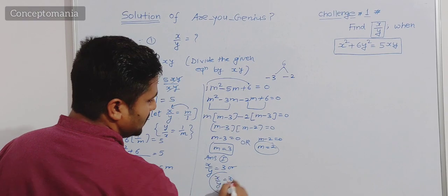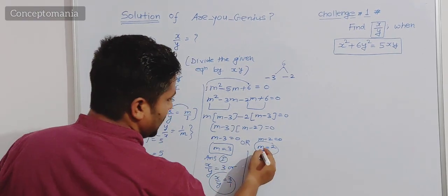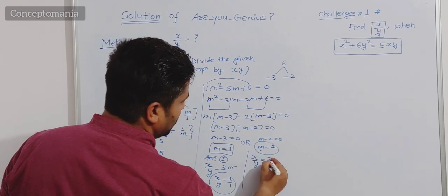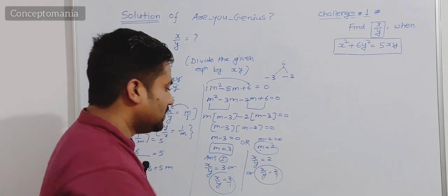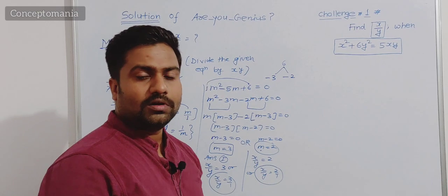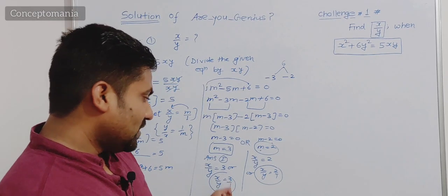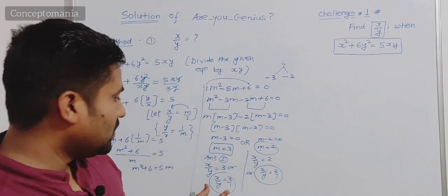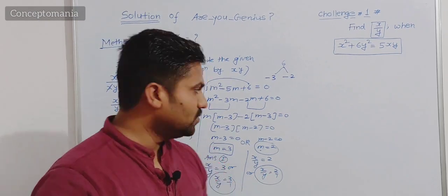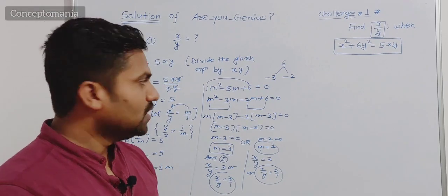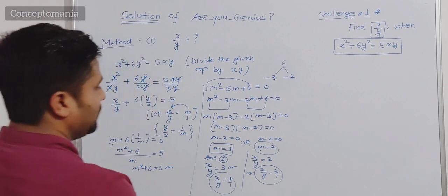If m equals 2 then x upon y equals 2 by 1, so x is to y is 2 is to 1. So there are two possible answers: if ratio is asked, the answer is 3 is to 1 or 2 is to 1. If unique value of x upon y is asked, the answers are 3 and 2. Hope all these points are clear. Let us quickly move to Method Number Two.